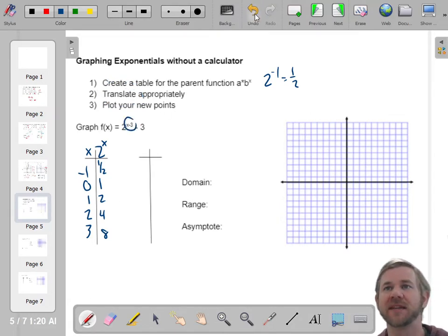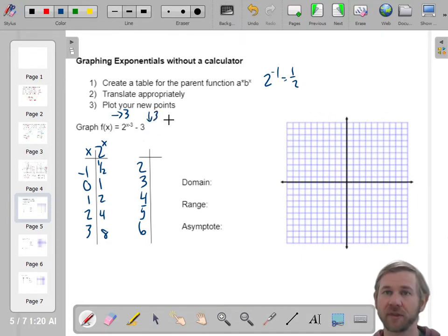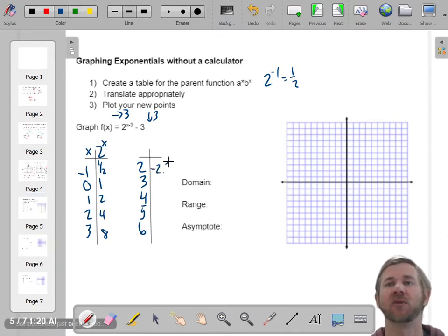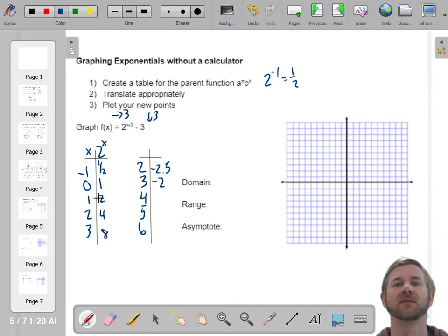So if you see an X minus 3 on the inside, remember that makes the function go to the right 3. Well, if you go to the right 3, take these X values, and go to the right, add 3. Negative 1 plus 3 is 2. 0 plus 3 is 3. 1 plus 3 is 4. 2 plus 3 is 5. 3 plus 3 is 6. Cool. Here, this also moves it down 3. The minus 3 moves it down 3. So going down 3, 1 half minus 3, I'll say negative 2.5. 1 minus 3 is negative 2. 2 minus 3 is negative 1. 4 minus 3 is 1. 8 minus 3 is 5. So what I've done is I took a parent function and used what I know about translations to move the whole thing. And now this is what I'm actually trying to graph. This is my function, f of X.